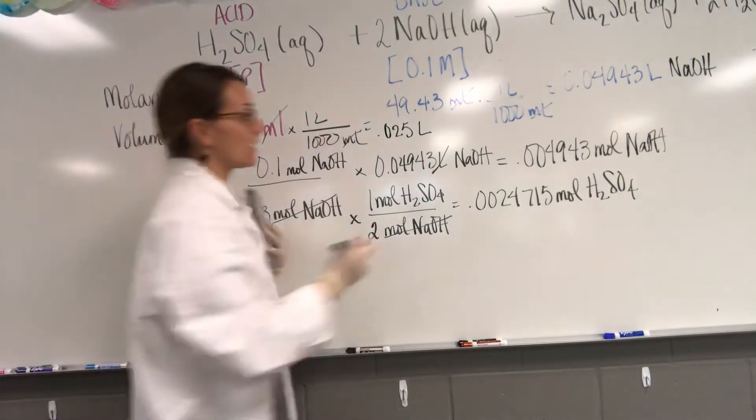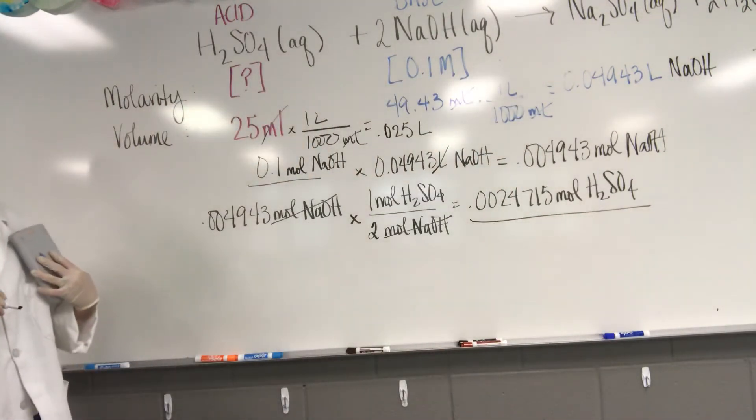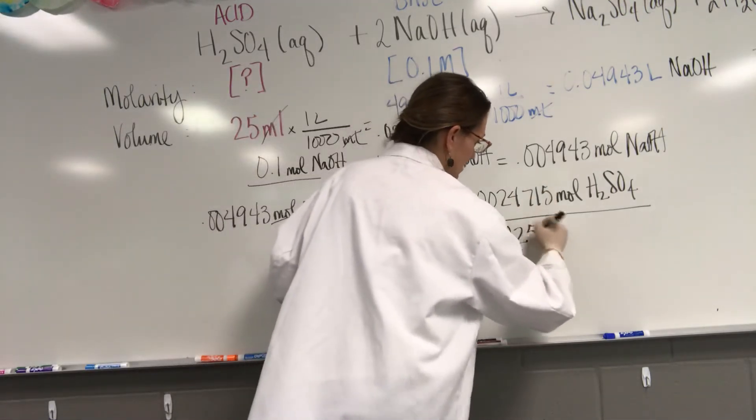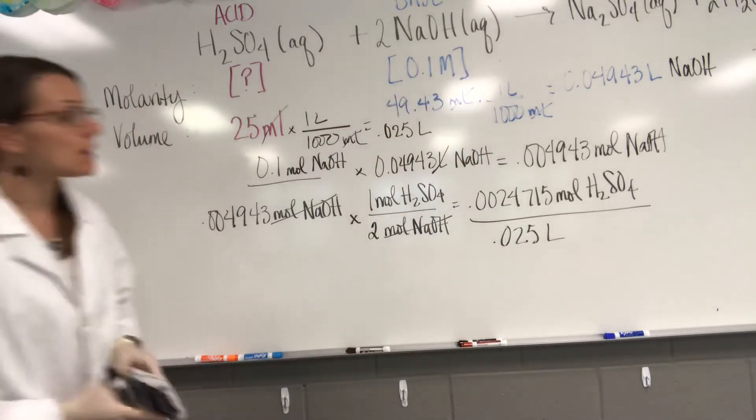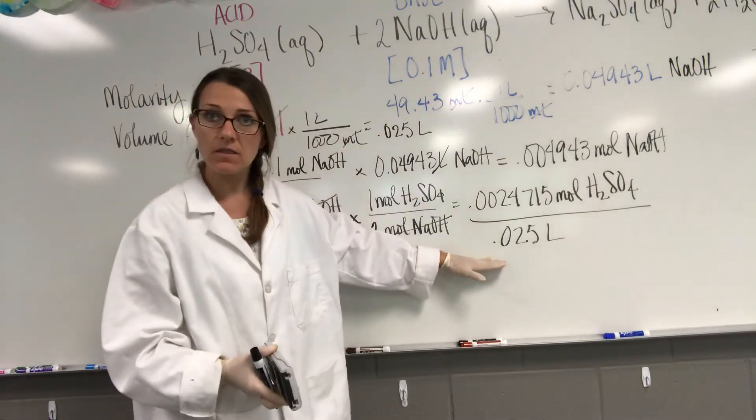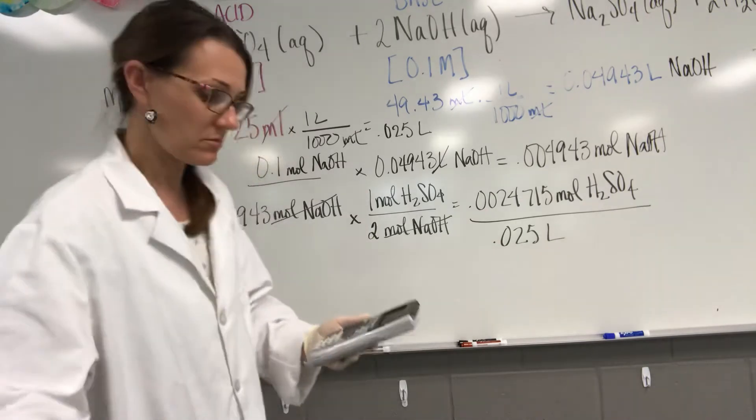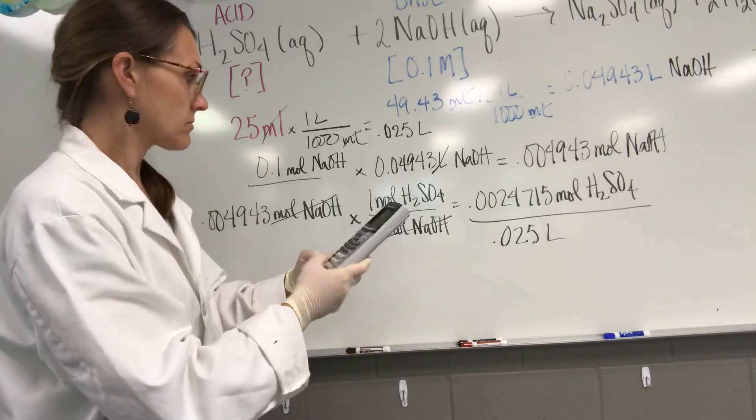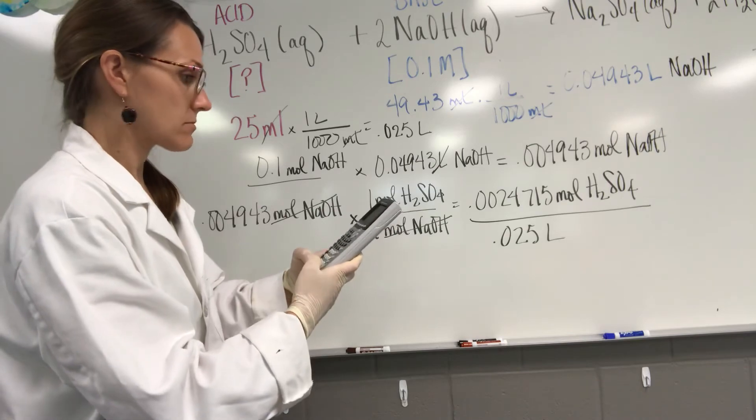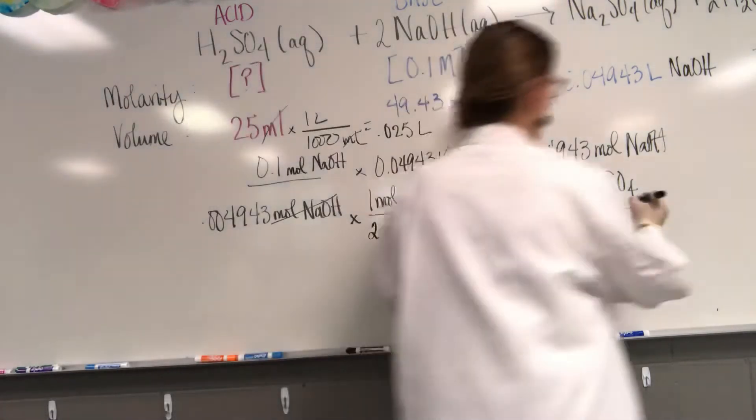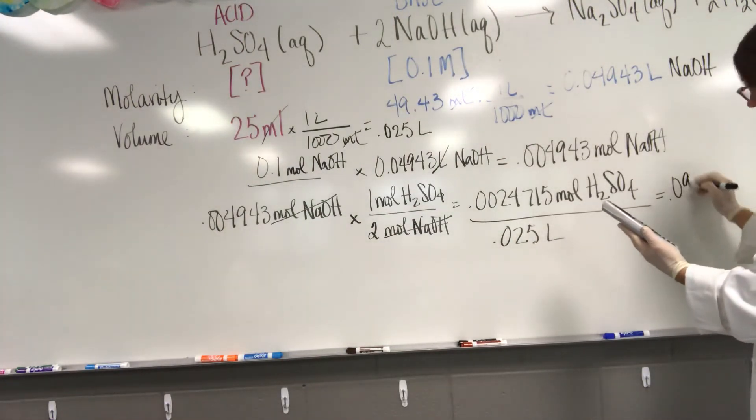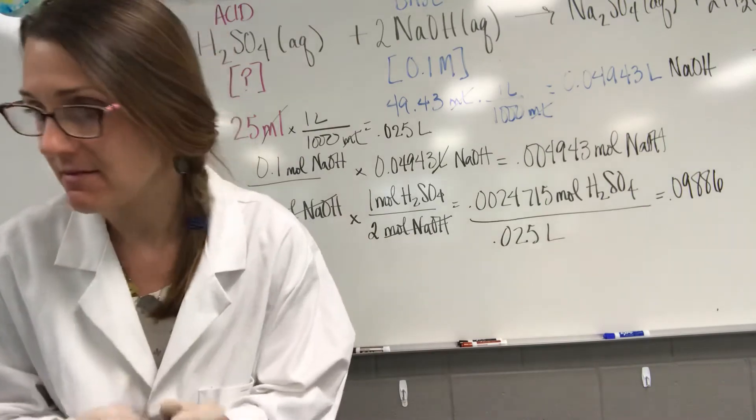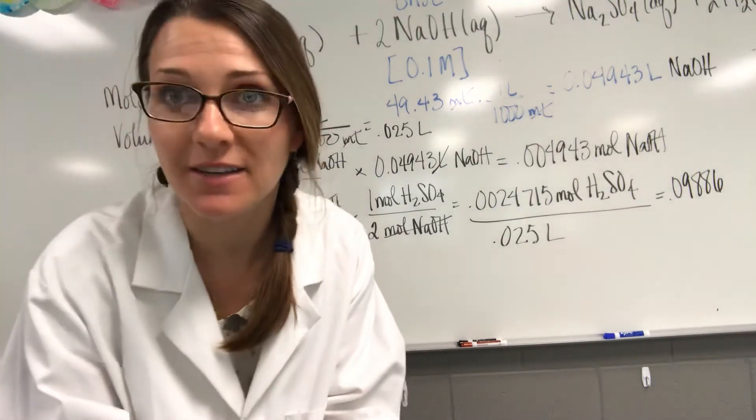And I'm going to take that 0.025 liters of sulfuric acid solution and I'm going to divide the number of moles by the volume now that we've converted it to liters. We're going to cross our fingers. And I've got 0.09886, which is really close to 0.1.